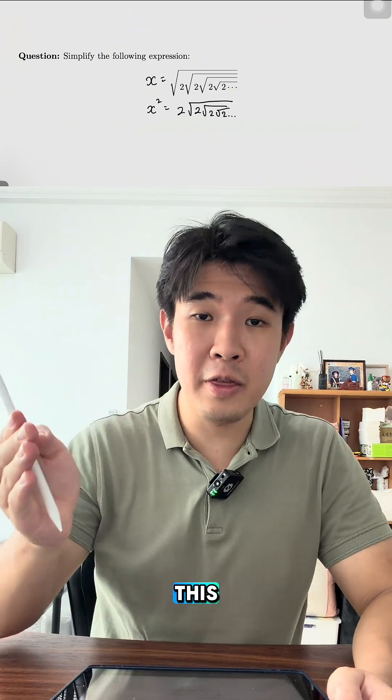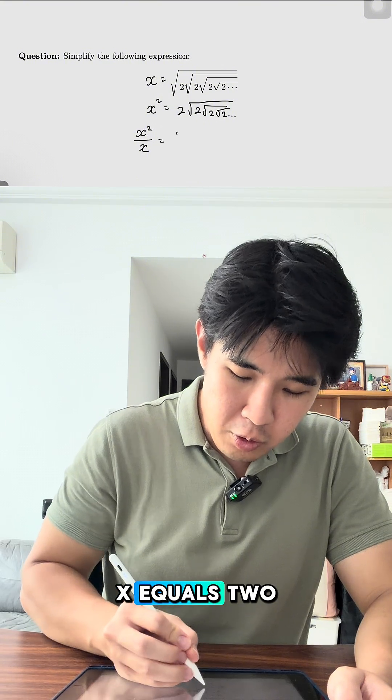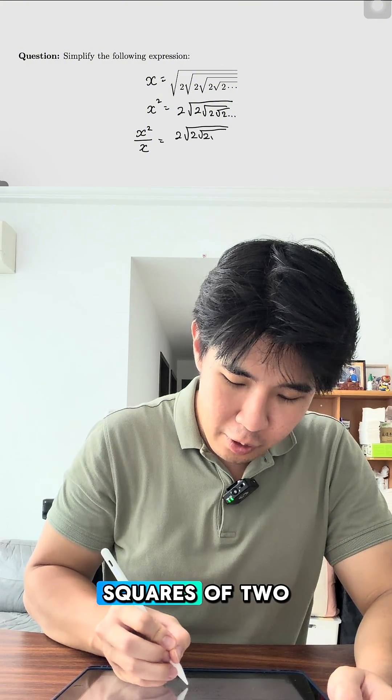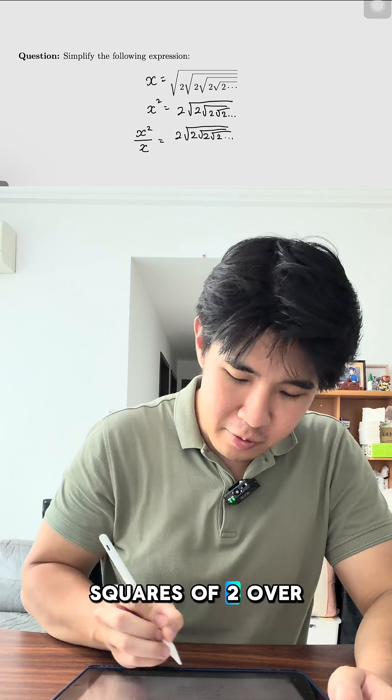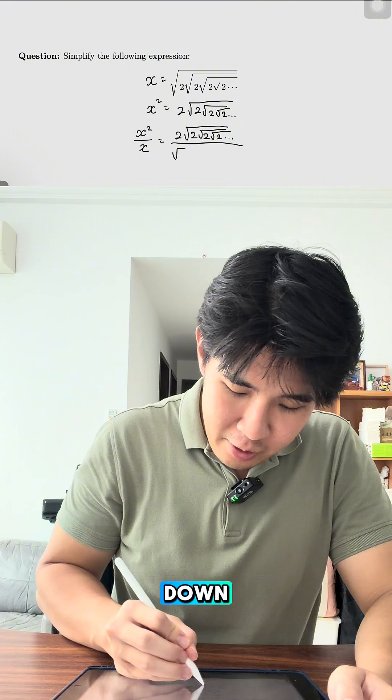Once you've got this, we can actually put it as x squared over x equals 2 square roots of 2, square roots of 2, square root of 2 over x. I'm gonna write it down.